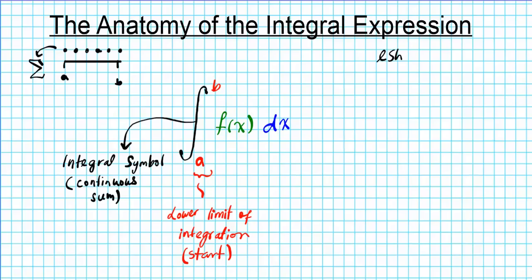Now what does b represent? b represents the upper limit of integration. When you're integrating over an interval from a to b you're starting from a and you're going to stop at b. So this is basically where you stop. You stop accumulating from.